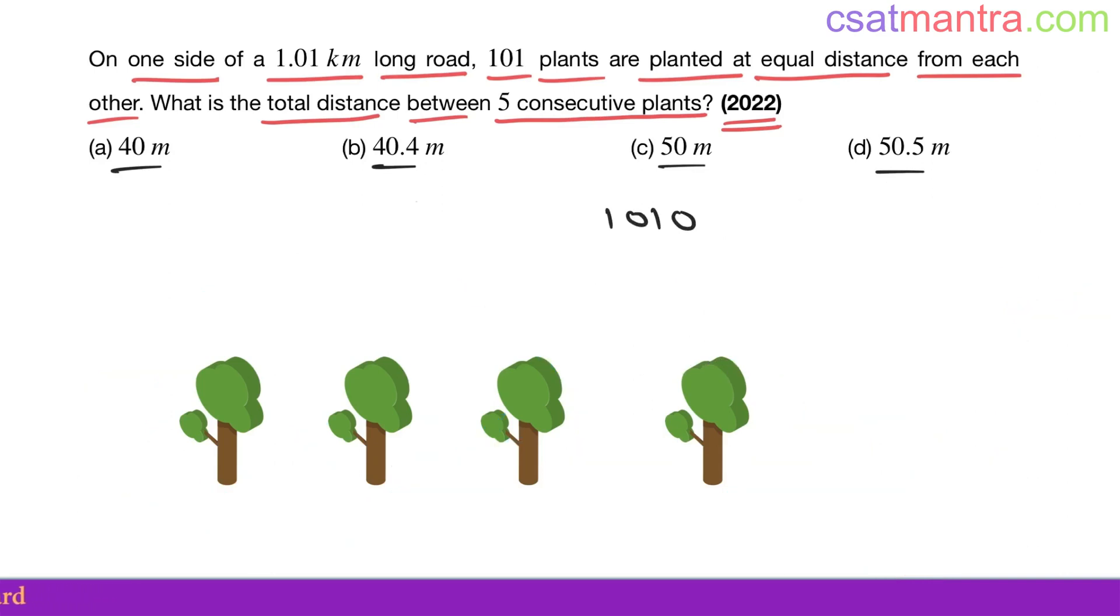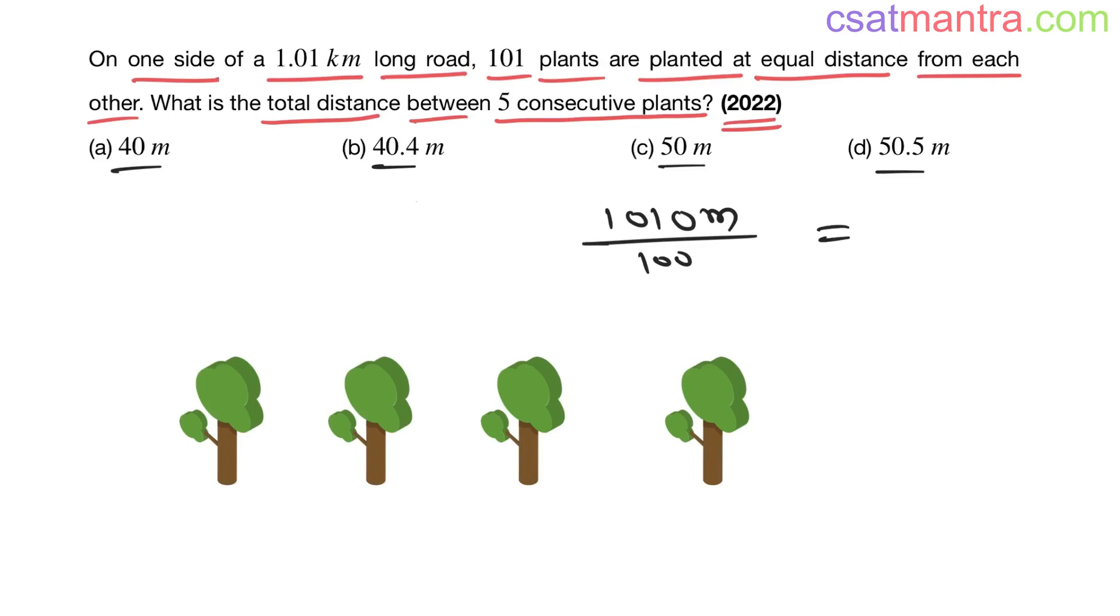So 10.1 meters each part. So five consecutive plants - one more plant here - so 10.1, 10.1, 10.1, and 10.1. What is the total distance?